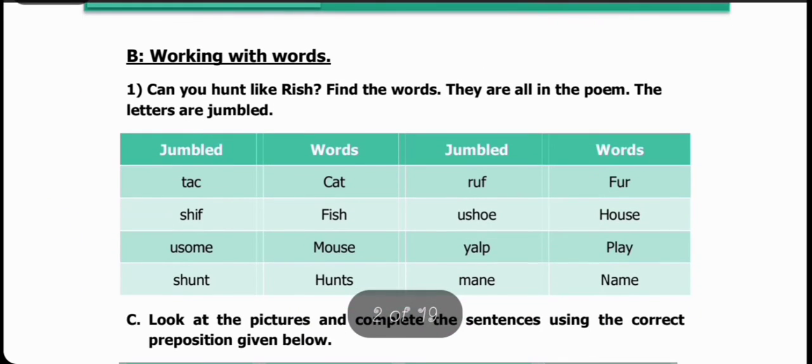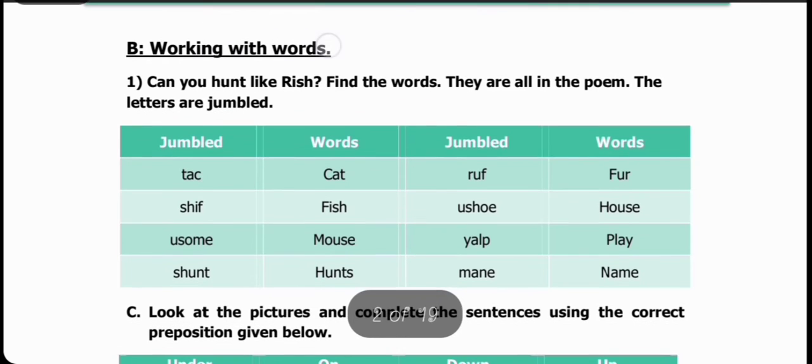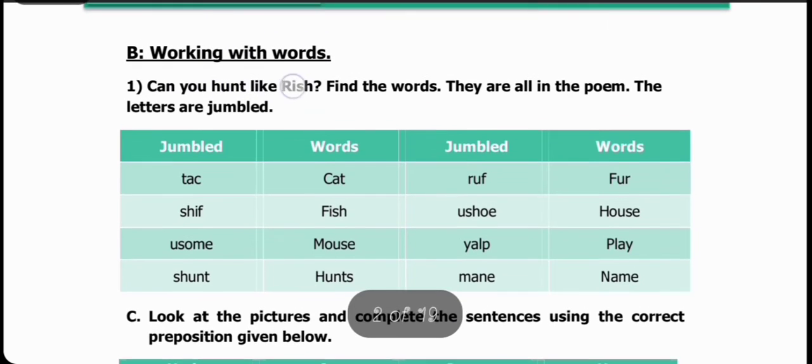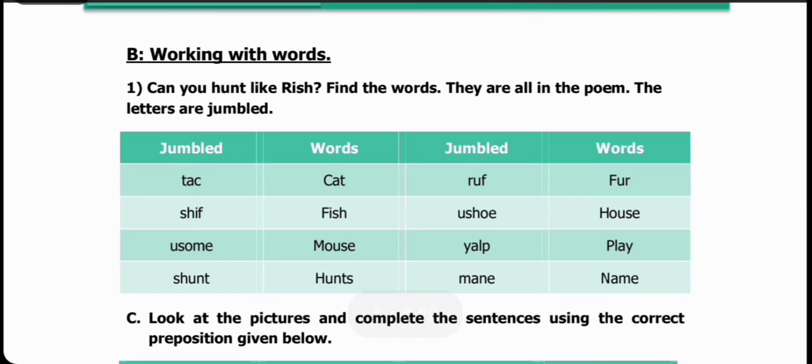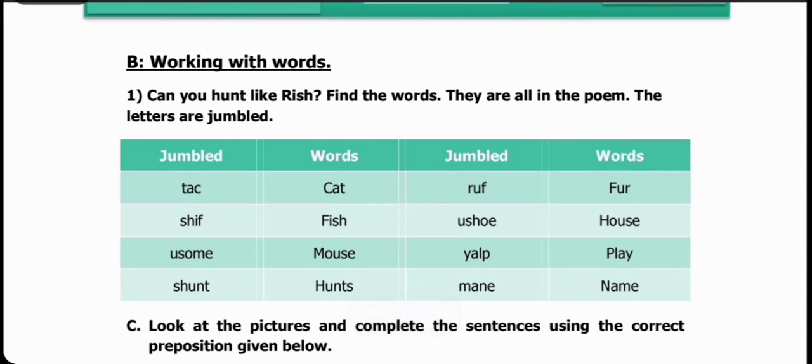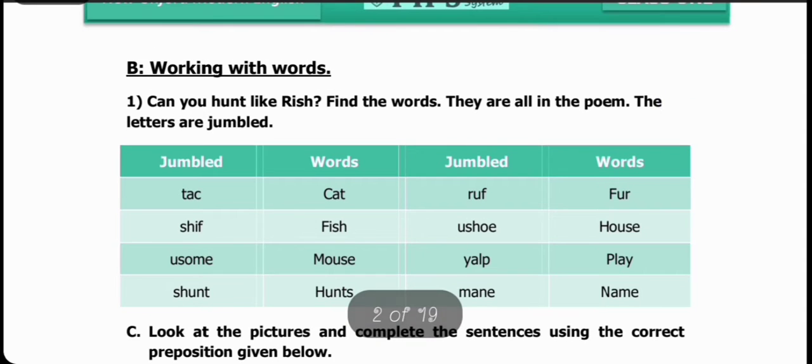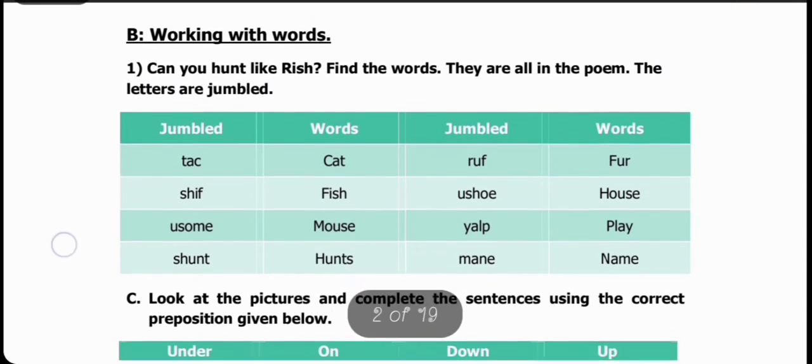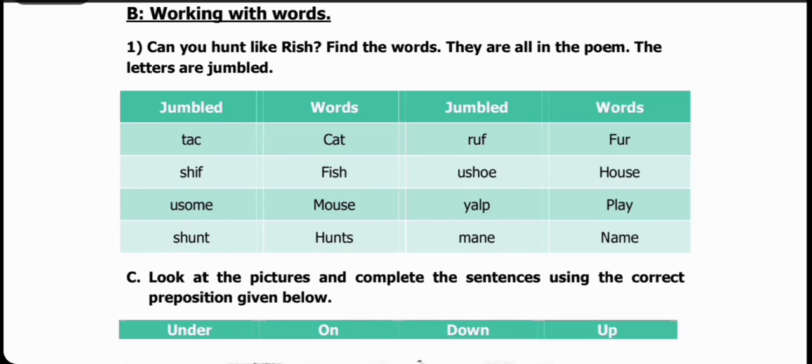Let's see the next question. Working with words. Can you hunt like Rish? Find the words - they are all in the poem. The letters are jumbled. You have to arrange the letters and make a word from them. On one side are jumbled letters, on the other side are words.